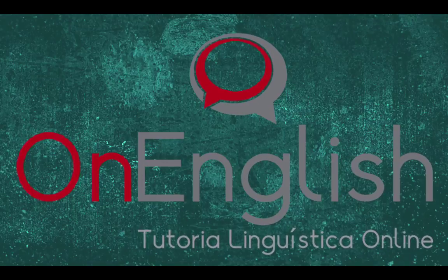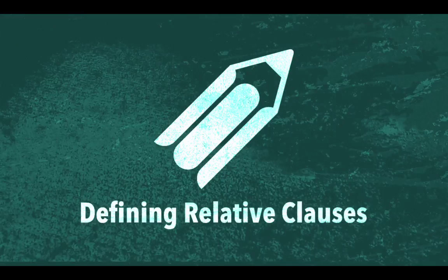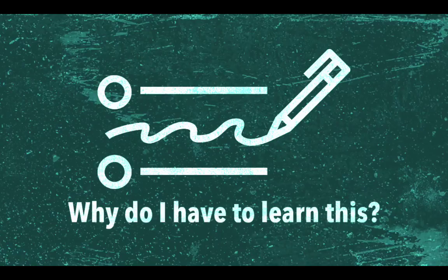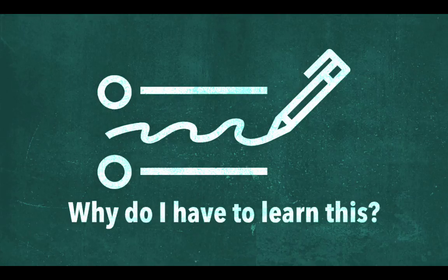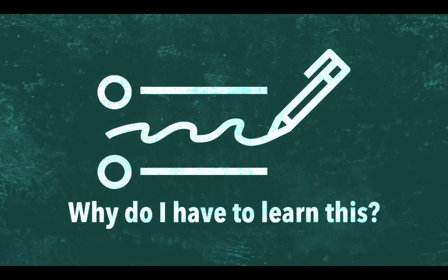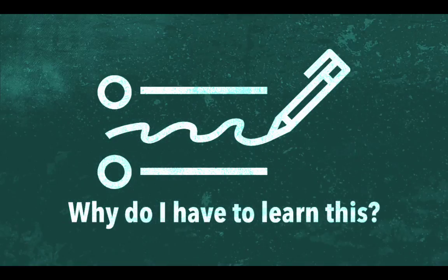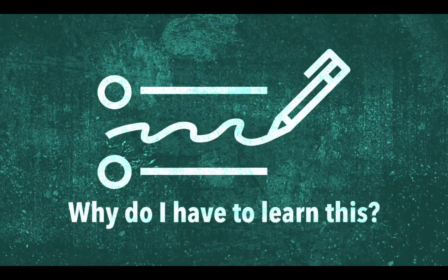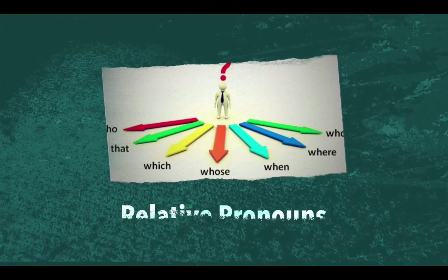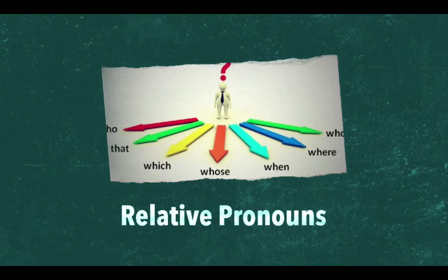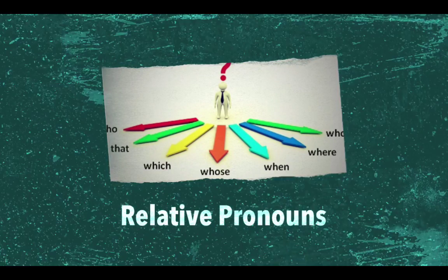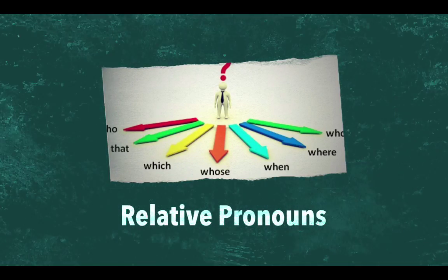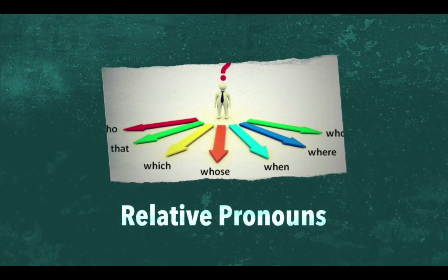On English presents: Defining Relative Clauses. If this name sounds complicated and you're not at all into studying grammar, here's some sound advice. Not only is this language useful when you're speaking, but it is also a fundamental part of writing in English. In order to avoid repetition of words, a relative pronoun is used to substitute for what you need to say twice. This language is called Relative Clauses.